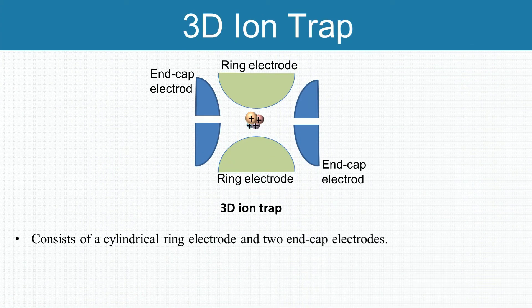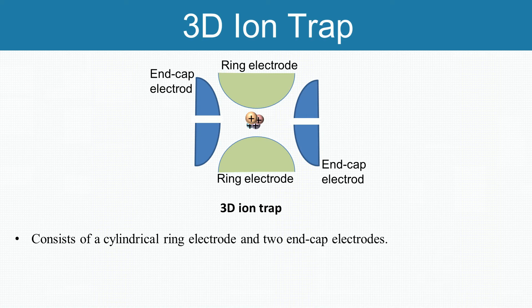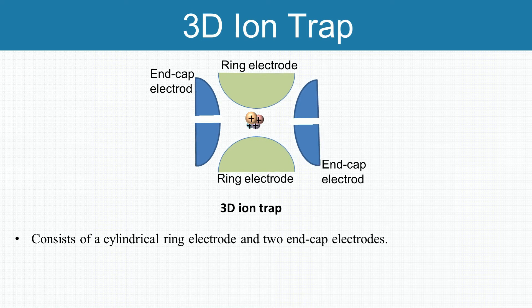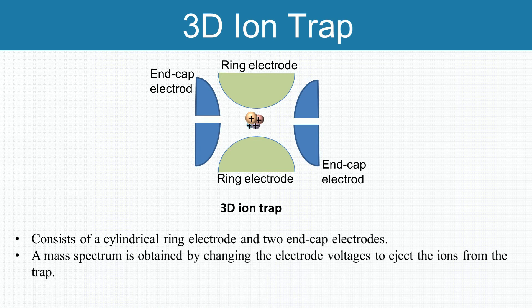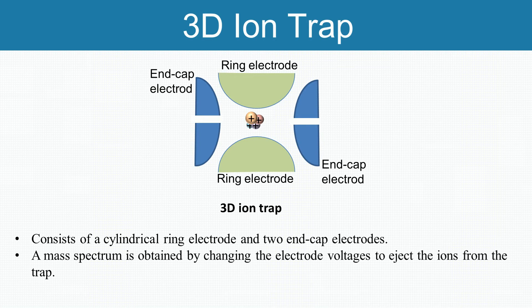The three-dimension ion trap mass analyzer uses three electrodes to trap ions in a small volume. It consists of a cylindrical ring electrode and two end-cap electrodes. A mass spectrum is obtained by changing the electrode voltages to eject the ions from the trap. The end-cap electrodes contain holes for the introduction of ions from an external ion source and for the ejection of ions towards an external detector.